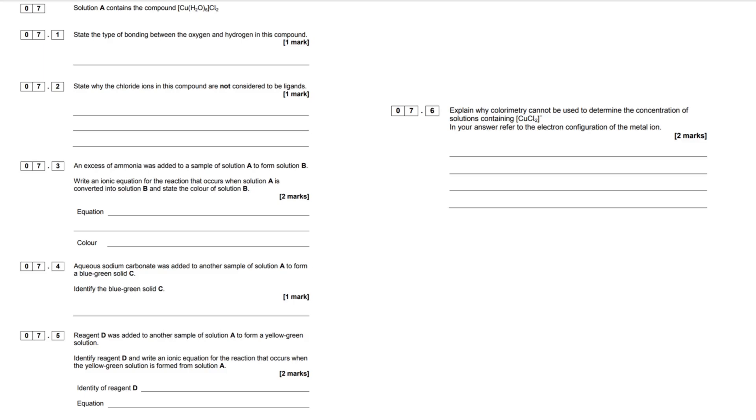So what I'm going to do is jump straight into this then. Solution A contains the compound copper H2O6Cl2. So what do we have here? We have an aqueous copper water molecule complex with two chlorines attached in some way. So first question then is to state the type of bonding between the oxygen and the hydrogen.